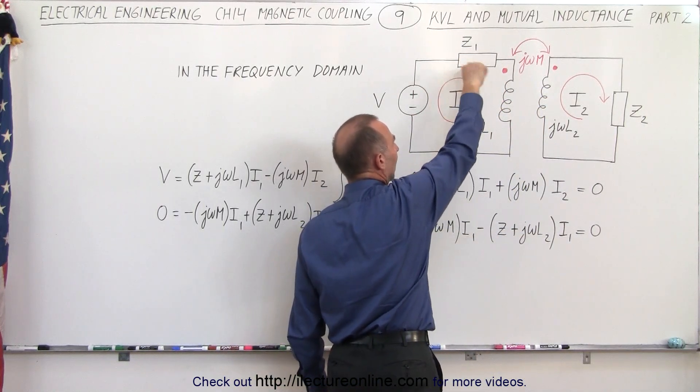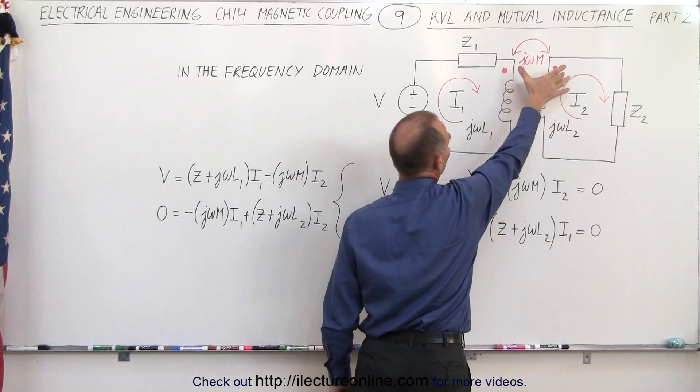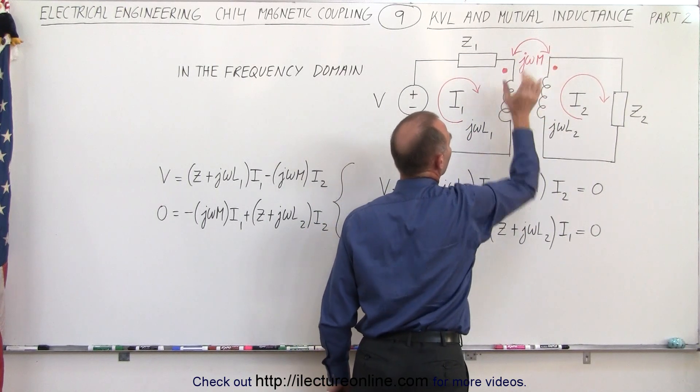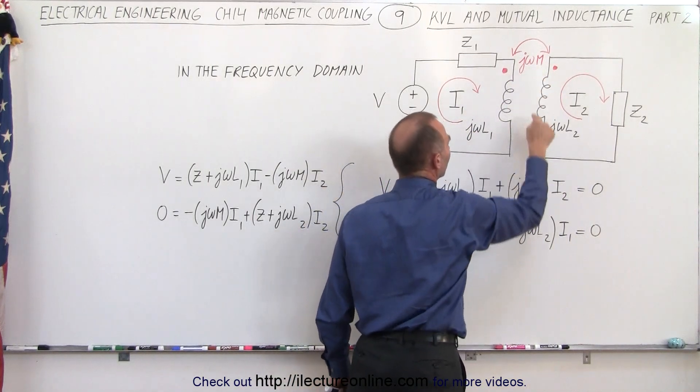Notice that the current in I1 is in the opposite direction. And since they're coupled with the same polarity on the coupling, then we can say that this is going to be a voltage rise from here to here. So it's going to be a plus jωM times I1.